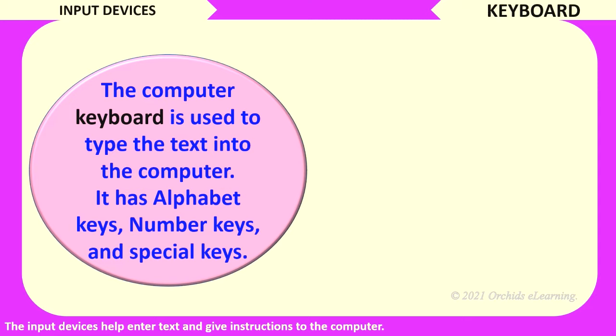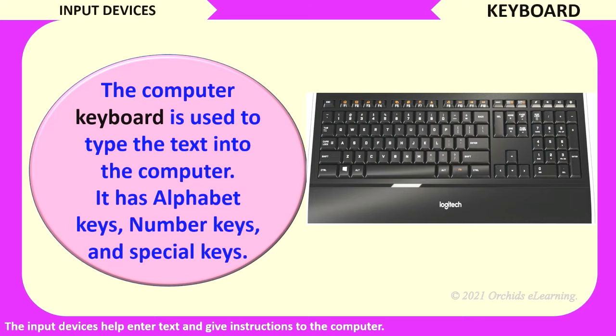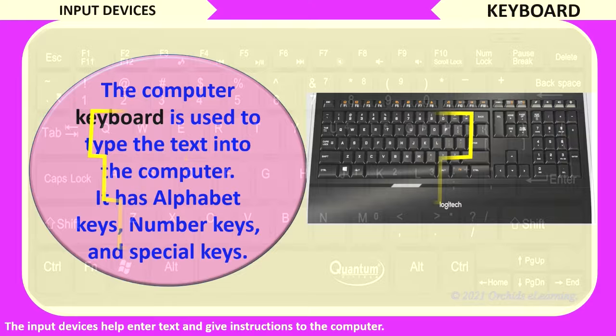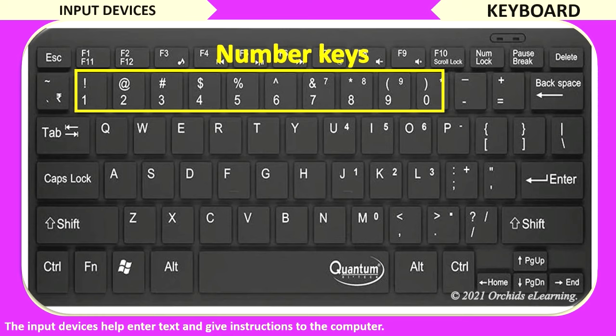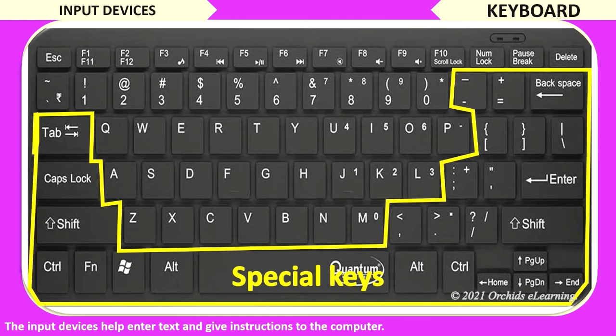The input devices help enter text and give instructions to the computer. First is keyboard. The computer keyboard is used to type text into the computer. It has alphabet keys from A to Z, number keys from 0 to 9, and special keys such as the space bar, control, alter, delete, backspace keys, etc.